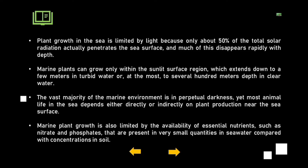As stated, only 50 percent of total radiation penetrates the surface of the sea. Marine plants can grow only within the sunlit surface region, which extends down to a few meters in turbid water or at most to several hundred meters depth in clear water. The vast majority of the marine environment is in perpetual darkness, yet most animal life in the sea depends either directly or indirectly on plant production near the sea surface.